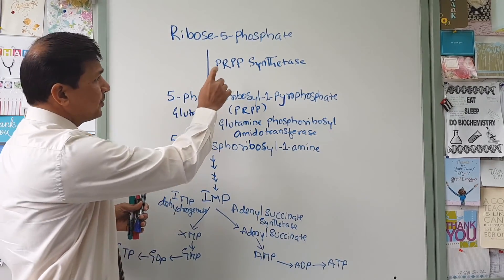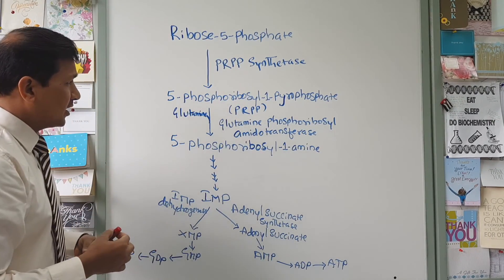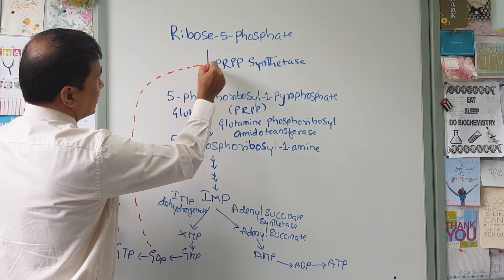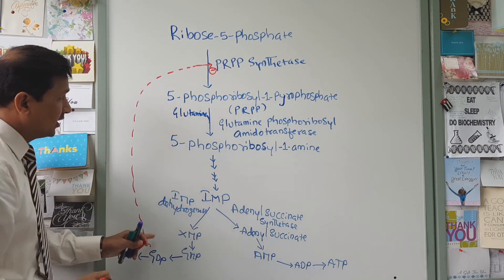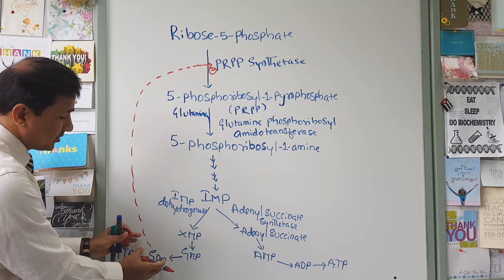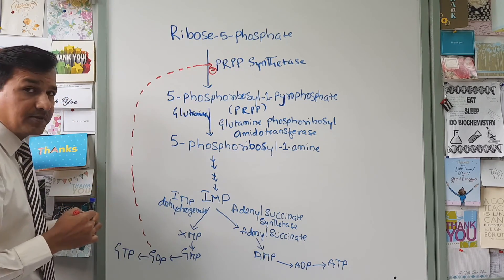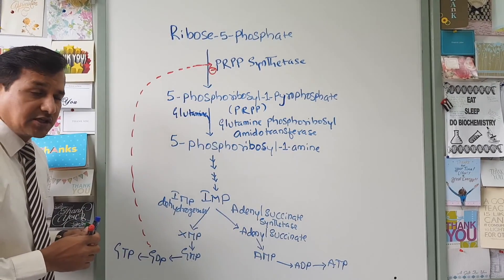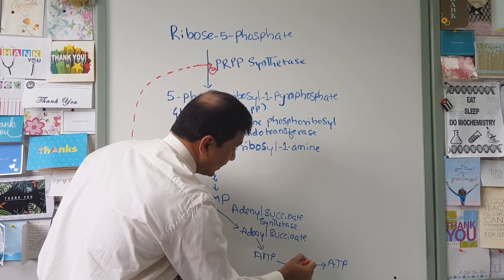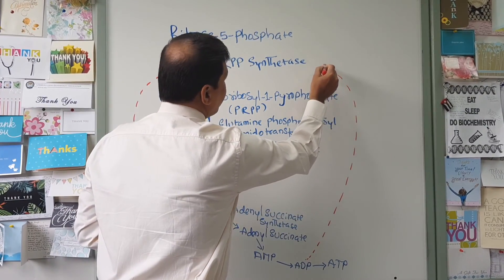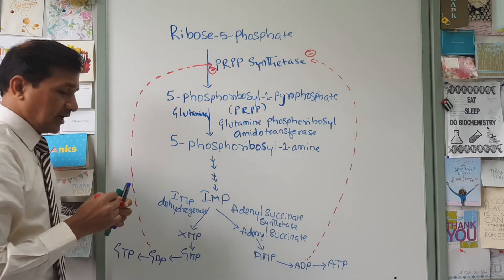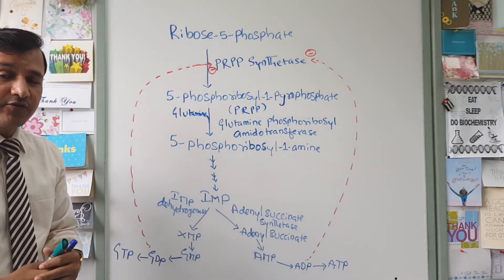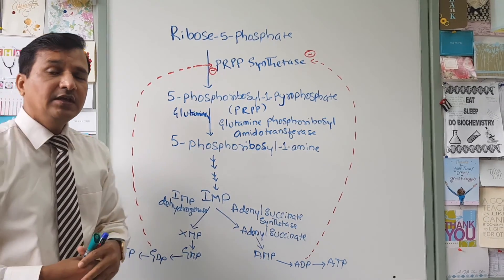PRPP synthetase is feedback inhibited by guanosine diphosphate (GDP). Whenever GDP accumulates, it has a negative effect on PRPP synthetase, thereby decreasing PRPP synthesis and nucleotide biosynthesis. Similarly, adenosine diphosphate (ADP) also has a negative effect on PRPP synthetase — accumulation of ADP brings down the pathway just as GDP does.